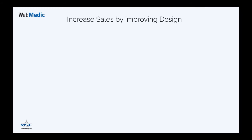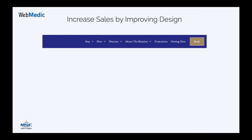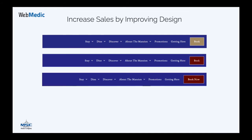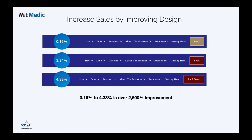Here's another example: a website with a booking button, where we tested two other variations. Can you guess which is best? The original button got a 0.16% click-through rate — it needs 1,000 people to get 1 click. The red button got 3.34%, meaning 100 people get about 3 clicks — a huge improvement already. Adding the word 'now' made it 4.33%. So from 0.16% on the original to making it red and adding 'now' — that's over 2,600% improvement in click-through rate.